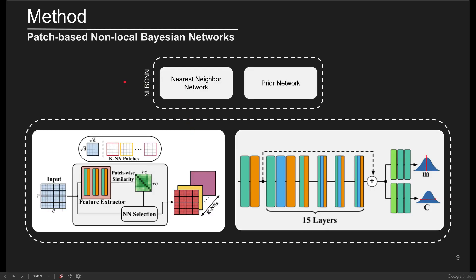We propose to leverage the strengths of patchwise non-local Bayesian filtering and incorporate it into deep neural networks. Therefore, we develop a method consisting of two subnetworks, the nearest neighbor and the prior network. We'll present their details in the next slides.